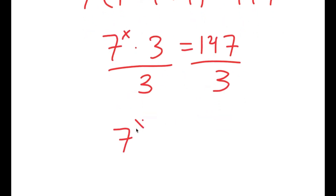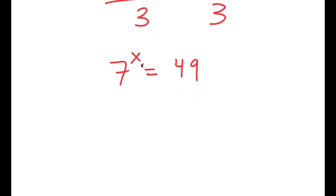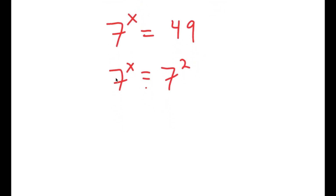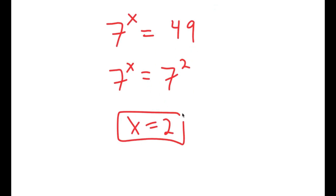So 7 to the power of x is equal to 147 divided by 3 — that's going to equal 49. So I get 7 to the power of x is equal to 49. And 49 is equal to 7 squared. So I have 7 to the power of x is equal to 7 to the power of 2, meaning x is equal to 2.